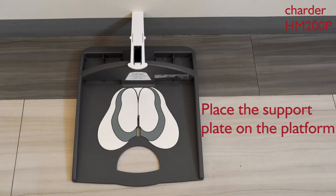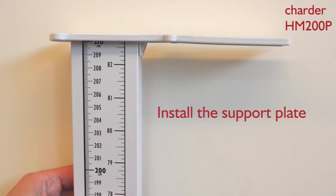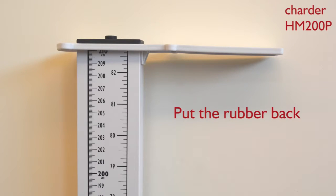Example assembly procedures: Take out the measuring rod showing 210 cm. Remove the rubber cover on top, then install the support plate on the rod. Put the rubber cover back.